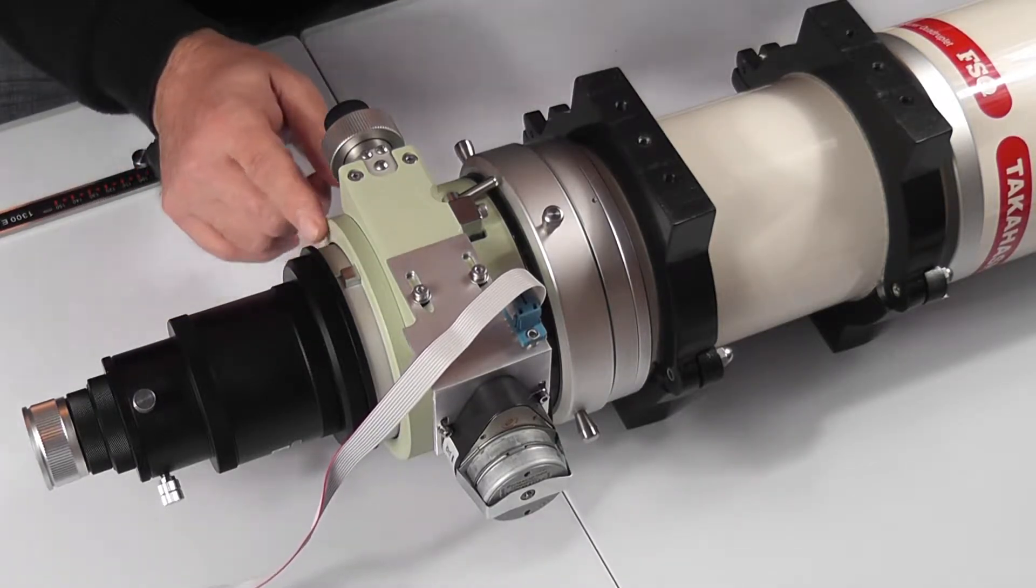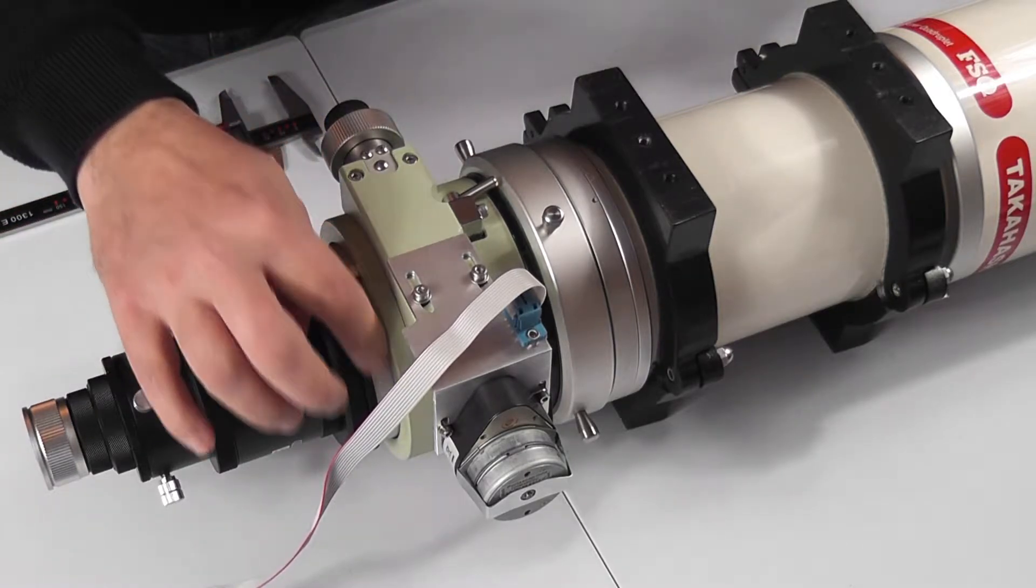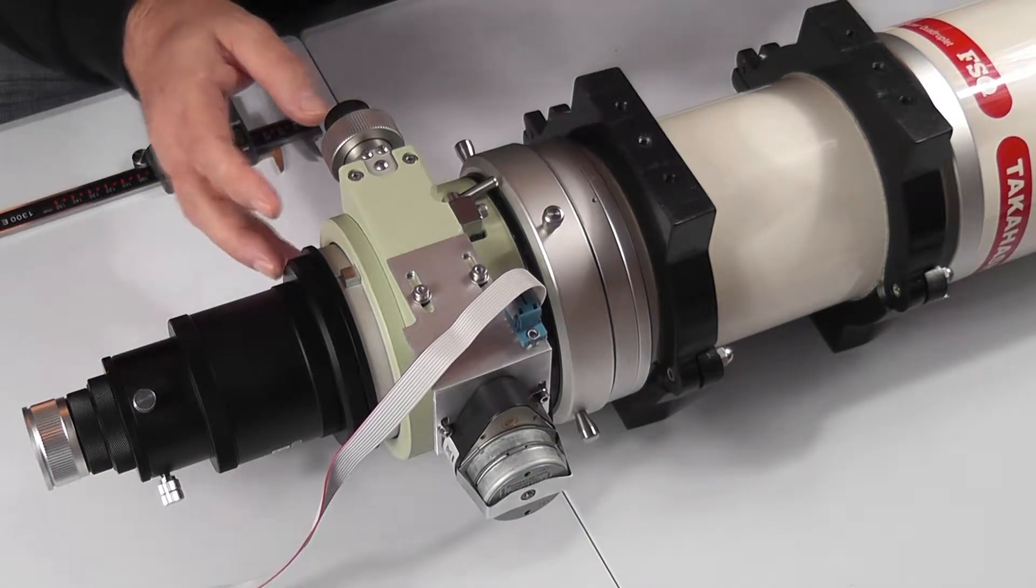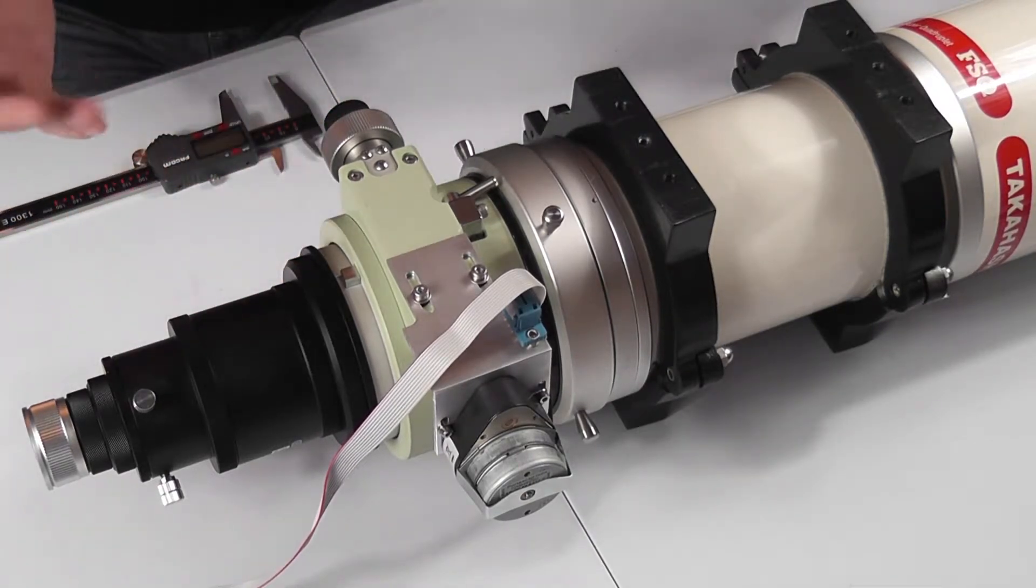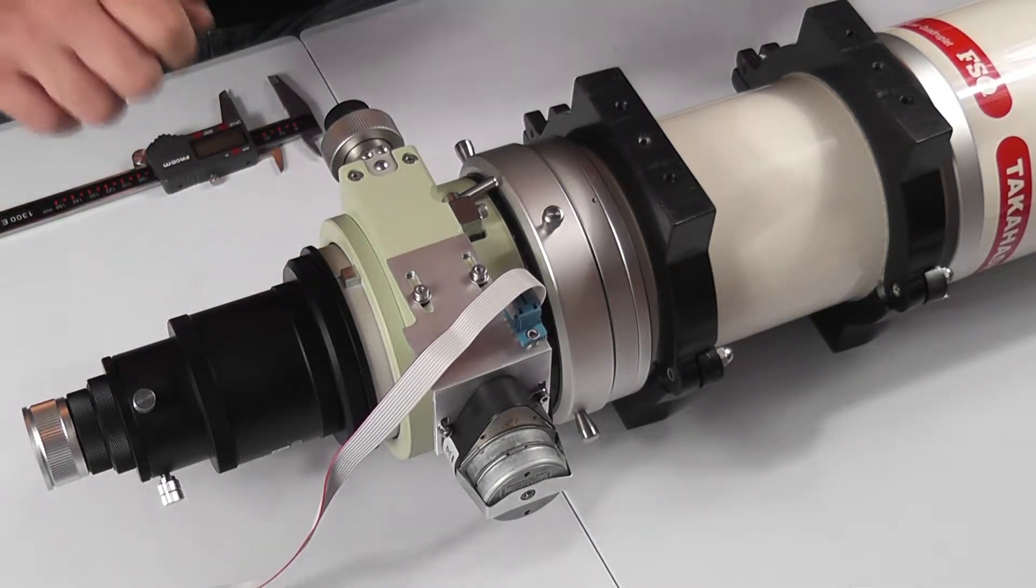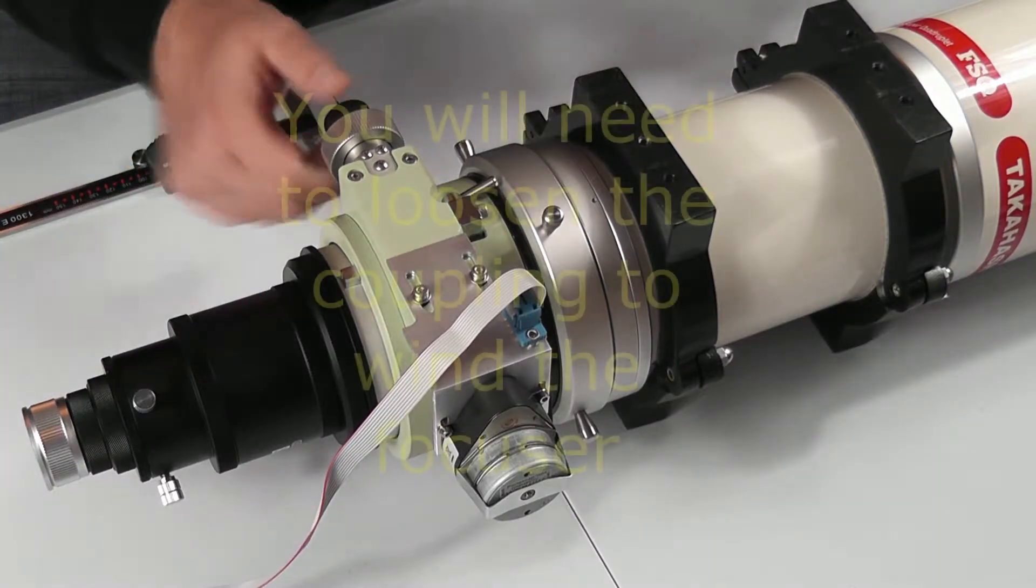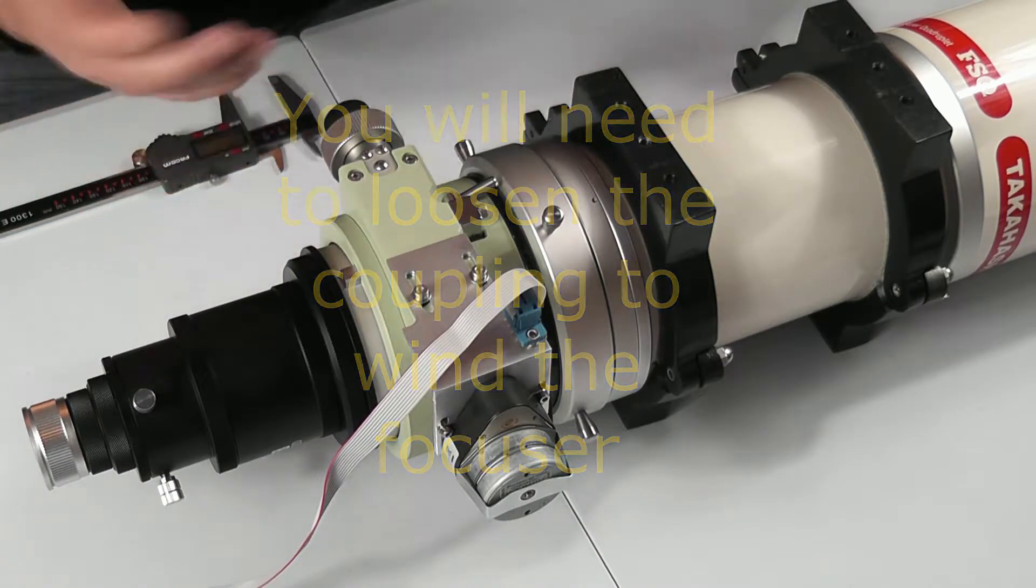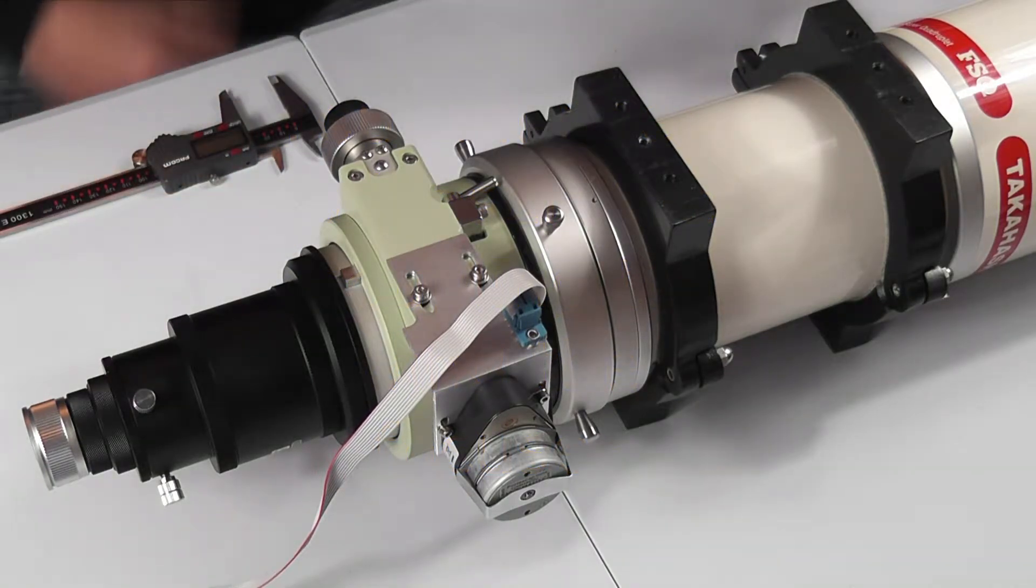Now the Takahashi doesn't, but I've measured it and you may need to measure your focuser to get it quite exact. So you just wind your focuser all the way out to the extended position, and then you can measure or look at the increments and see exactly how far it extends.